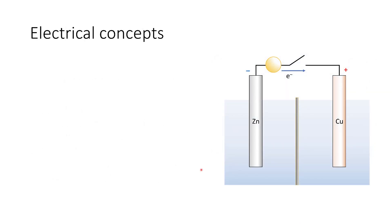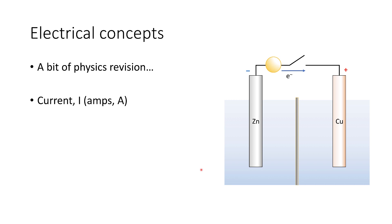In order to make measurements on electrochemical cells, we need to establish some basic electrical concepts. This will require a little bit of physics revision, but is vital to understand. The first of these is current. Current is simply the flow of charge and how it moves around a circuit. It can be delivered in a number of different ways, but fundamentally it is a transfer of charge.